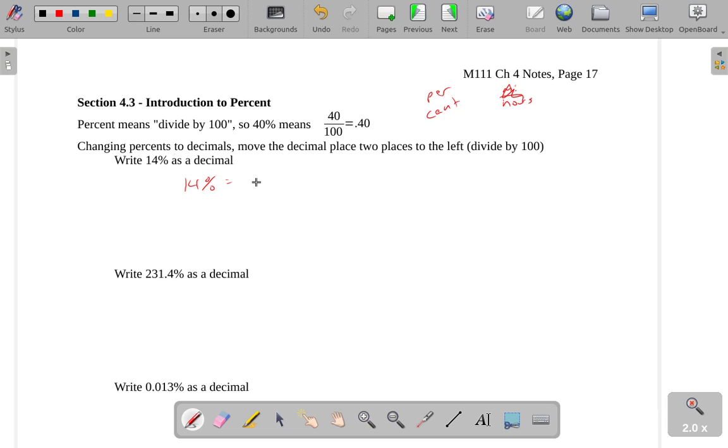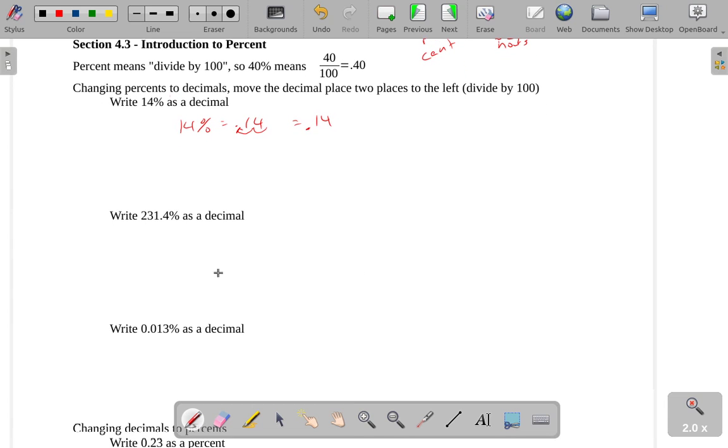14% means 14 divided by 100. To account for the fact that we're dividing by 100, I'm going to move my decimal place over one, two places. So it gets right here. We get 0.14. 14%, I rewrite as 0.14. That's how I write it as a decimal. And it's always two places that I'm going to be moving.